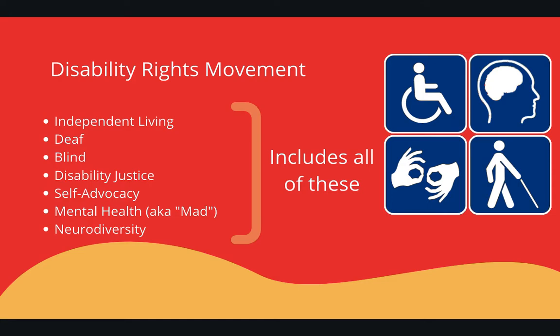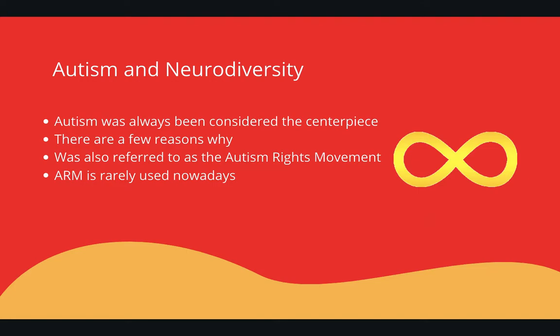The neurodiversity movement is part of the disability rights movement, which includes sub-movements such as independent living, the deaf movement, the blind movement, disability justice, the self-advocacy movement, the MAD movement, and of course the neurodiversity movement. All of these movements have their own histories, leaders, and influencers, but there is cross-pollination between them — they're not completely independent of one another and often work in tandem.